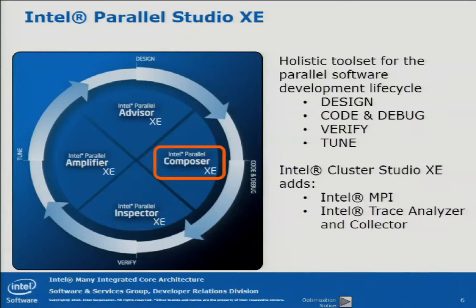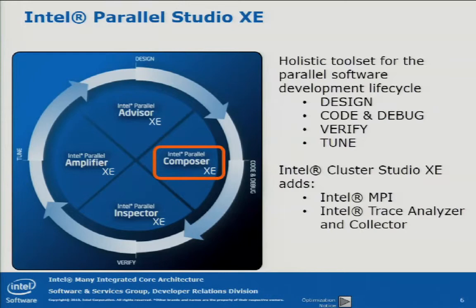Then we have something called Inspector XE — that's the correctness tool, kind of a debugger to analyze parallel programs for correctness. Then we have the Amplifier XE, which is the part to do performance analysis — we will cover that tomorrow morning. And we have a tool called Perl Advisor. That's probably not so much of an HPC tool because most HPC people know how to think parallel, but it's basically a tool to give you some advice where you can find parallel spots in your code if it's still sequential. You apply this cycle until you're satisfied with performance or finished software development. The Intel Cluster Studio XE adds Intel MPI and the Trace Analyzer and Collector to actually analyze MPI low-level communication.